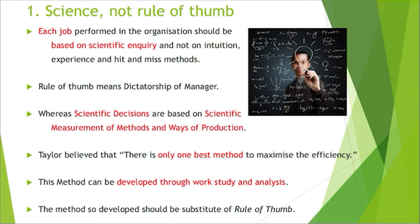Methods of production should be scientifically developed, not based on managers' intuition. Taylor says that there is only one best method to maximize efficiency. Every task has one best method which gives maximum efficiency — it takes minimum time, minimum cost, and results in maximum utilization of resources. This best method can be developed through work study and analysis. The scientifically developed method should be adopted instead of the rule of thumb.